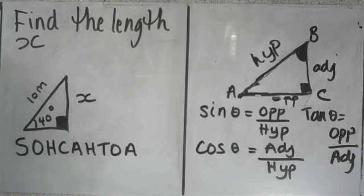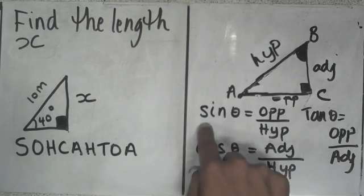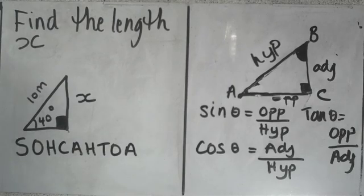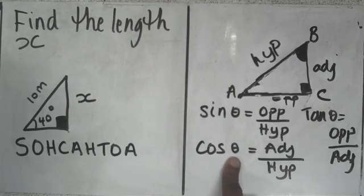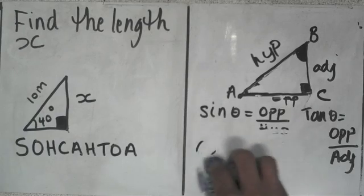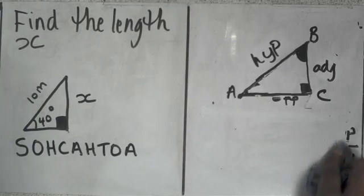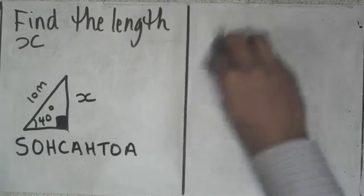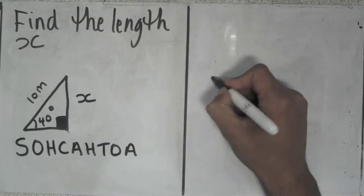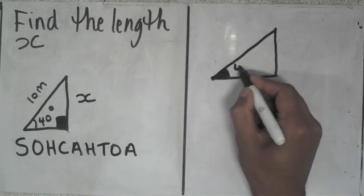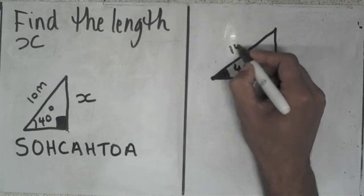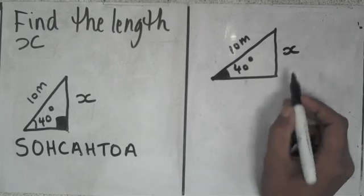Now we know how to label our triangle. Let's go ahead and try to use that to find what x is. So the question is, what formula do I use — sin theta, tan theta, or cos theta? Theta just stands for the angle that's given to me; in this case it's 40 degrees. It's just a Greek letter we use to denote an angle. Here's our triangle: I've got a 40 degree angle here, a side here which is 10 meters, and I'm trying to work out what x is — x is unknown.